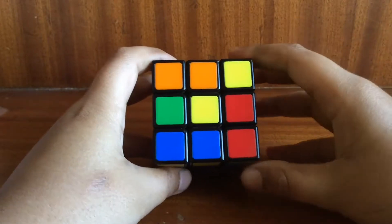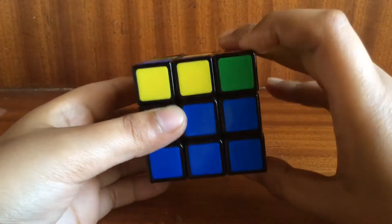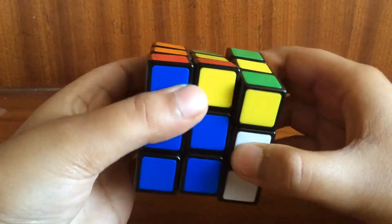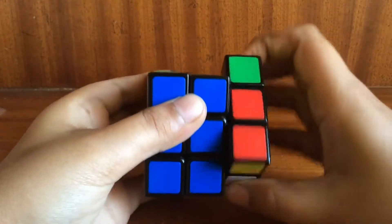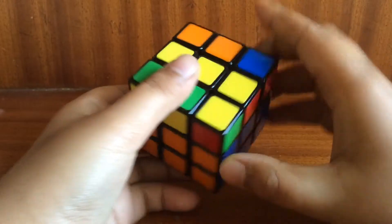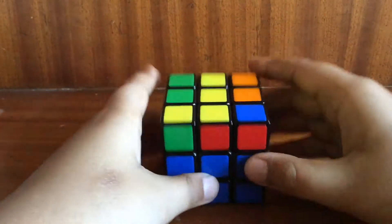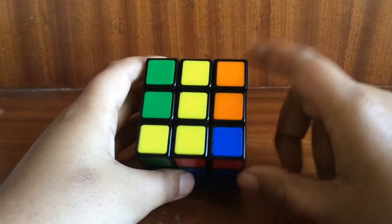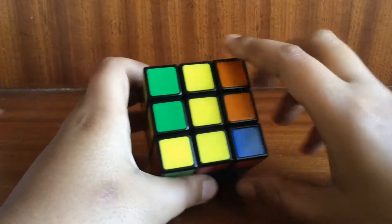If your cube is like this with the front center piece yellow, then do the following steps: F U R U' R' F'. Then your cube should get one of those situations which I mentioned earlier.